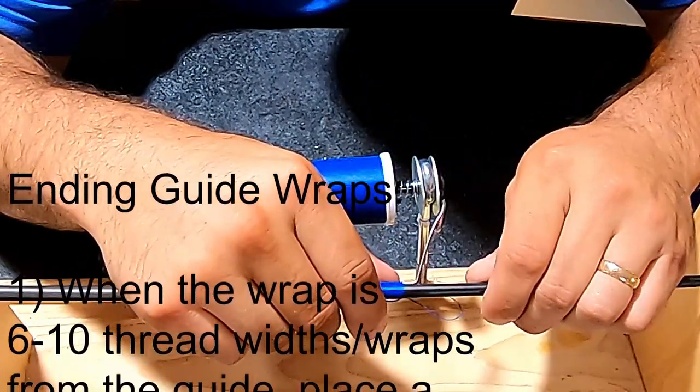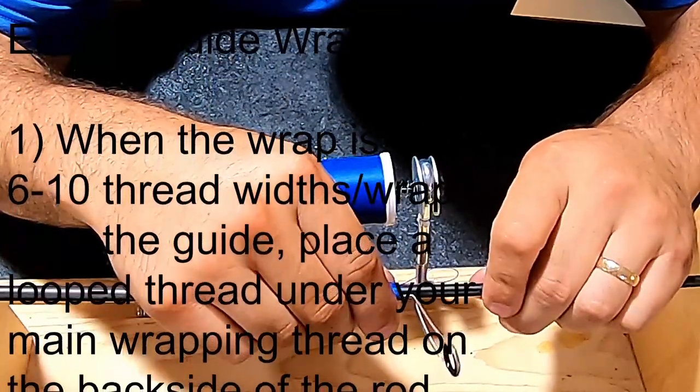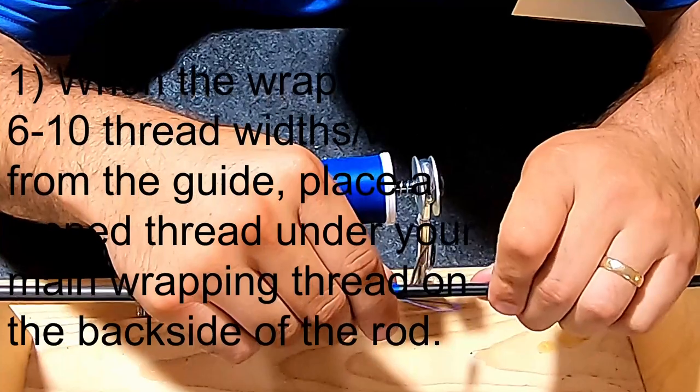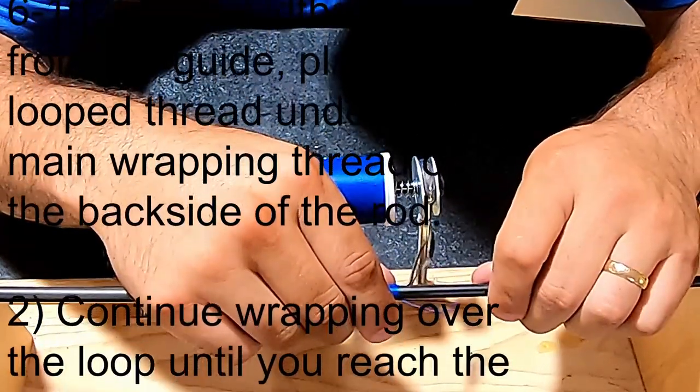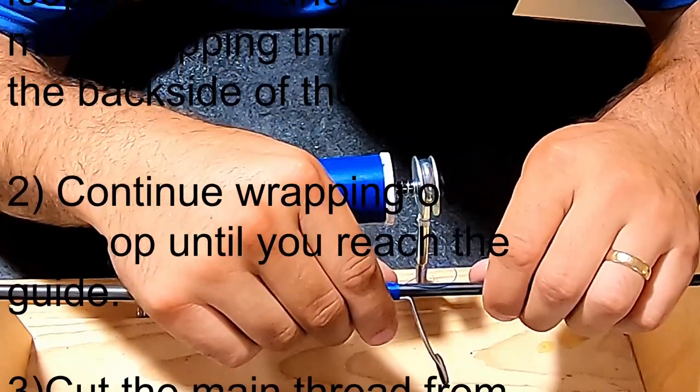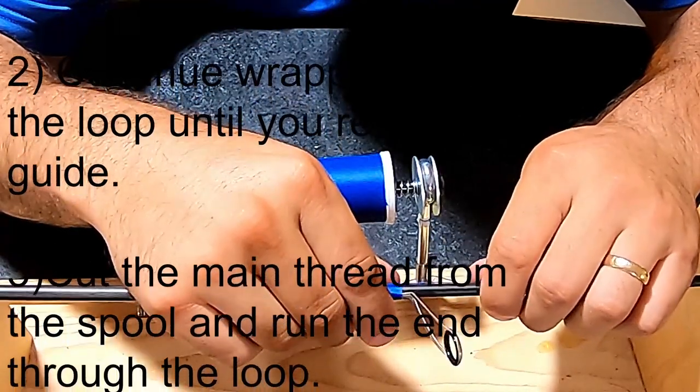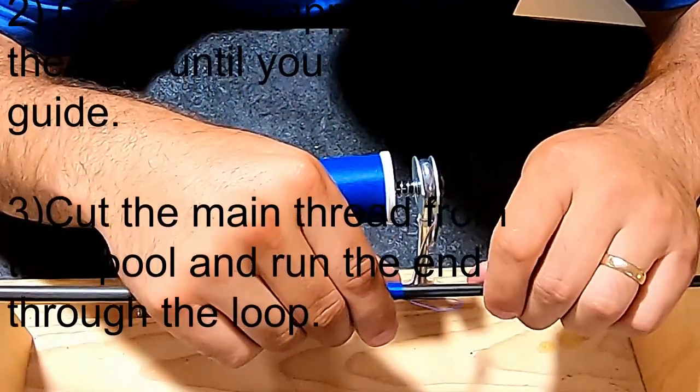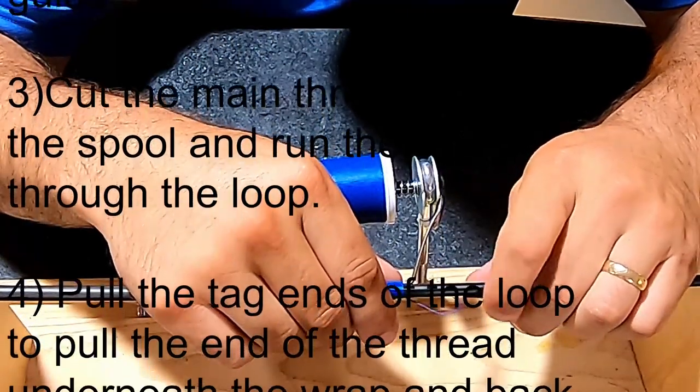You'll continue wrapping until you're about halfway up the guide foot. At that point, you can remove your tape. Then before you get to the end of the guide, you're going to want to take a loop of thread and slide it up on the back side underneath the mainline thread wrap. That way, you can use that loop to pull your thread through when you're done.